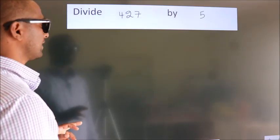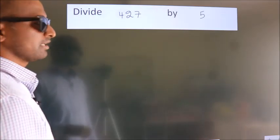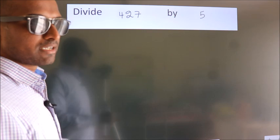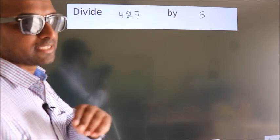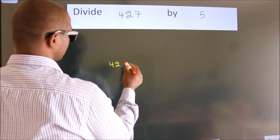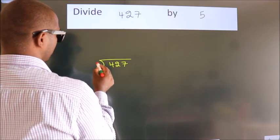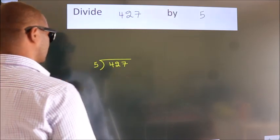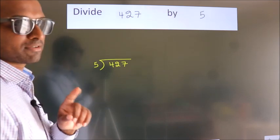Divide 427 by 5. To do this division, we should frame it in this way. 427 here, 5 here. This is your step 1.